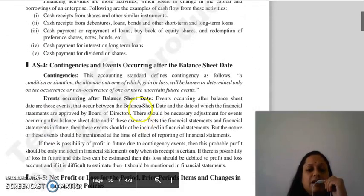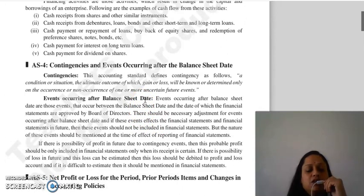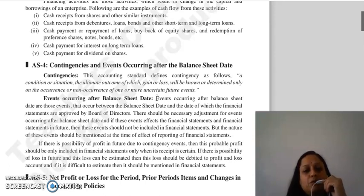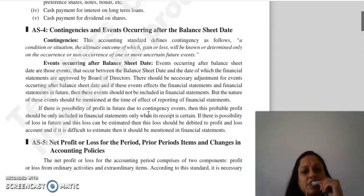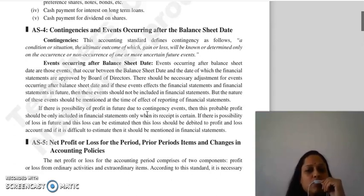Our next accounting standard is regarding contingencies and events occurring after the balance sheet date. Events occurring after the balance sheet date are those which occur between the balance sheet date and the date when the financial statements are approved by the board of directors.